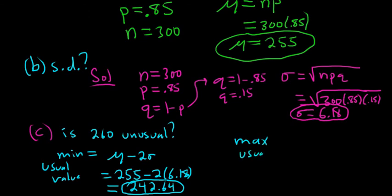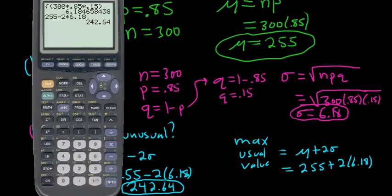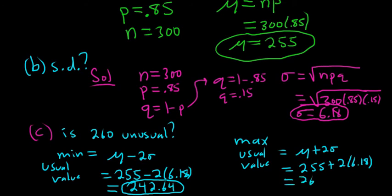Then the maximum usual value, that would be μ plus 2σ. So 255 plus 2 times 6.18. Let's type it in the calculator. That's 267.36. That's the maximum usual value.